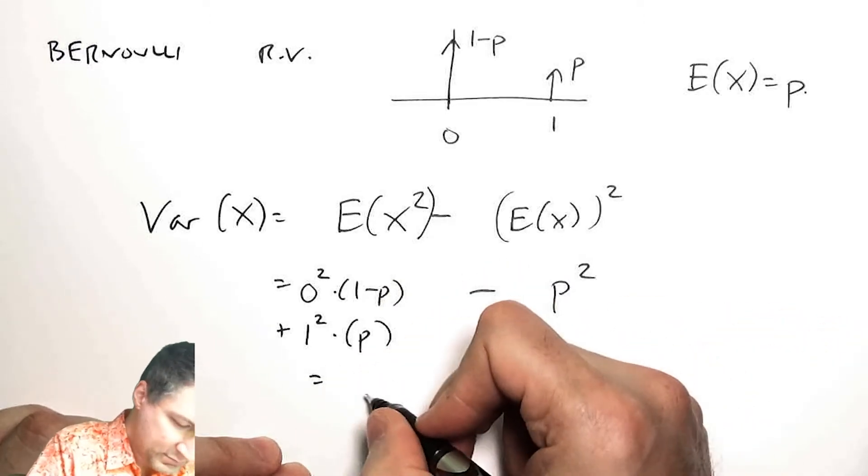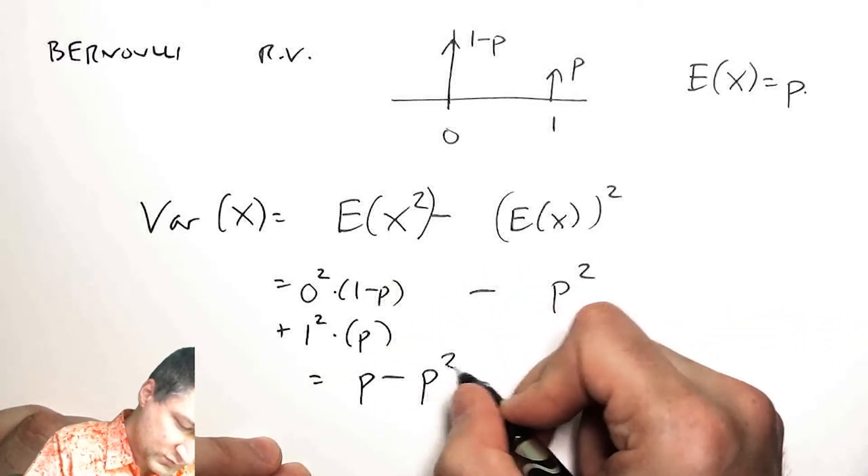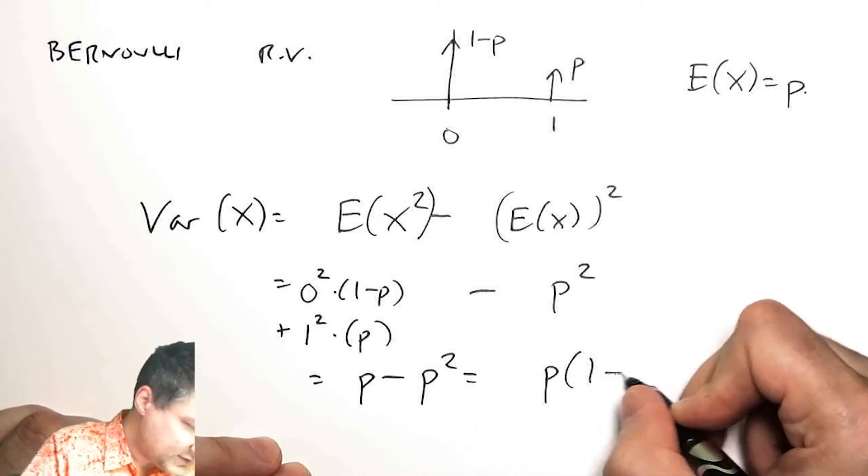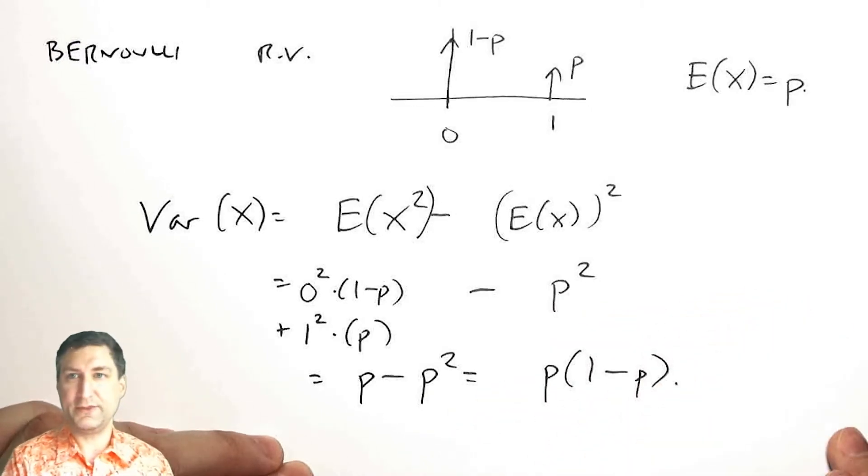It's 0 squared times (1 minus p) plus 1 squared times p. So what I have is p minus p squared, or a different way of writing this is p times (1 minus p).